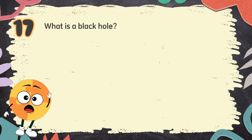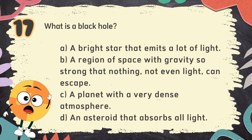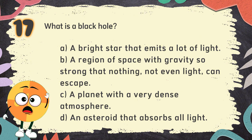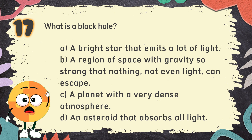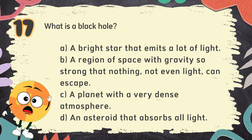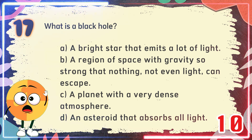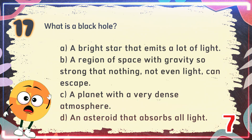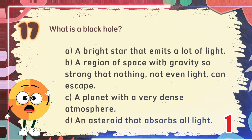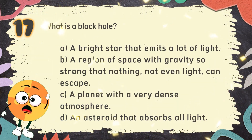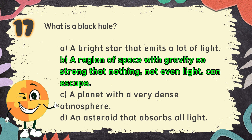Number 17. What is a black hole? The choices are: A. A bright star that emits a lot of light. B. A region of space with gravity so strong that nothing, not even light, can escape. C. A planet with a very dense atmosphere. D. An asteroid that absorbs all light. The correct answer is B: a region of space with gravity so strong that nothing, not even light, can escape.